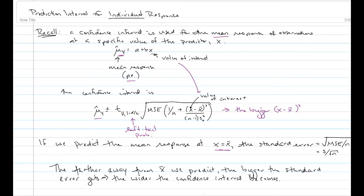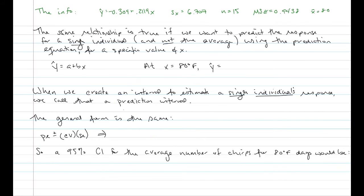Here is our cricket chirp data and the sample statistic information from our class notes. We have our estimated regression equation: y-hat equals negative 0.309 plus 0.2119X. The standard deviation of X is 6.707, we had a sample size of 15, an MSE of 0.9438, and X-bar equals 80.